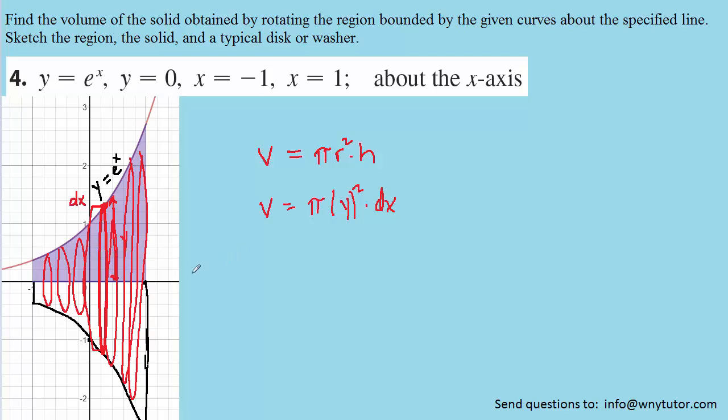Well, to calculate the volume of essentially an infinite number of cylinders, what we do is we integrate. And so we're going to integrate this expression. And we do that from our lower x value of negative one to our upper x value of positive one. And by doing that, we obtain the volume of all of those cylinders and hence the volume of our region.